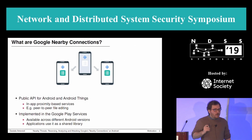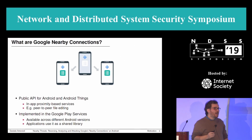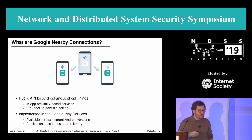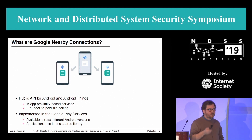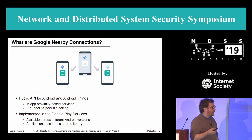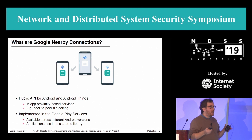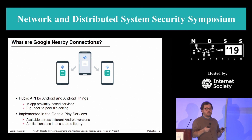So what is Nearby Connections? Nearby Connections is a public API available for Android and Android Things operating systems that an application developer can use to include proximity-based services in an application. An example is a peer-to-peer file editing app constrained to allow editing only to users in Bluetooth or Wi-Fi range.